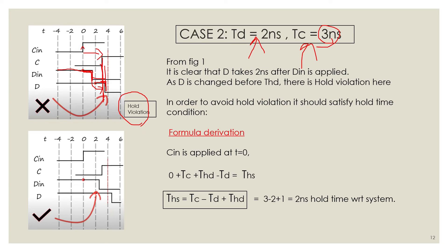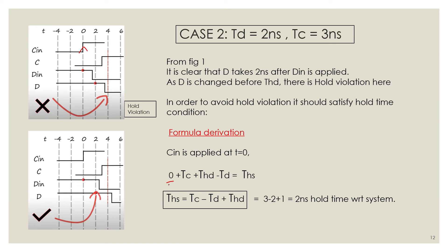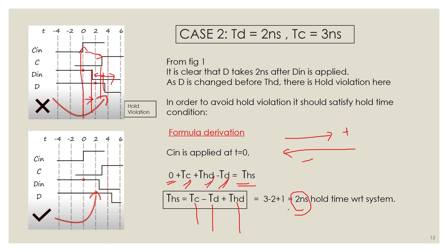To avoid hold violation, D must be stable for at least the hold time after the clock edge. D-in must accordingly remain stable for a sufficient time. This gives us the hold time with respect to the system, T_HS. Starting from C-in at t=0, moving forward by +T_C, then adding +T_H (hold time), and subtracting T_D in the opposite direction, we get T_HS = T_C − T_D + T_H. Substituting: T_HS = 3 − 2 + 1 = 2 ns. This is the hold time with respect to the system.